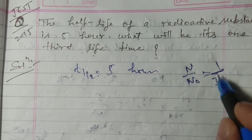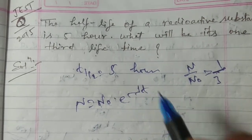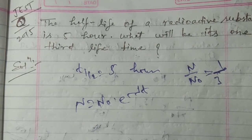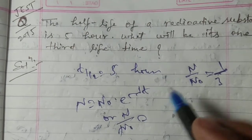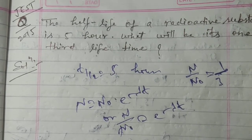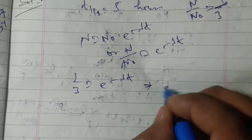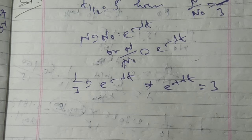Simply for the decay equation you can find N equal to N naught e to the power minus lambda t, or N upon N naught equal to e to the power minus lambda t. So this is 1 by 3 equal to e to the power minus lambda t, and this will give e to the power lambda t equal to 3. After taking log both sides we get lambda t equal to ln 3.